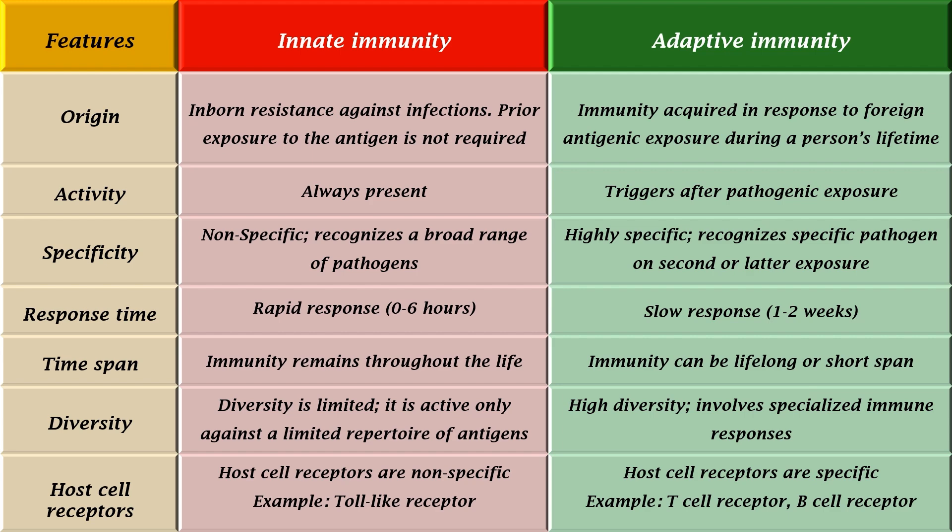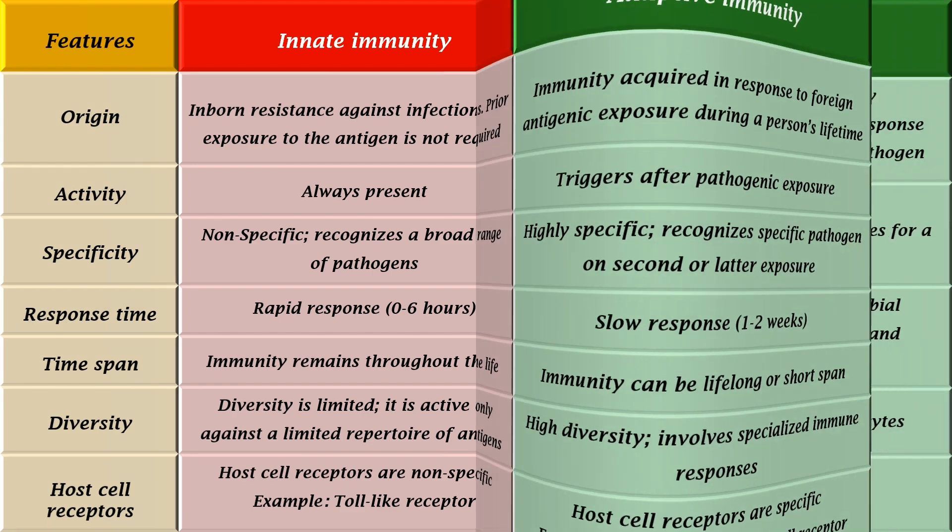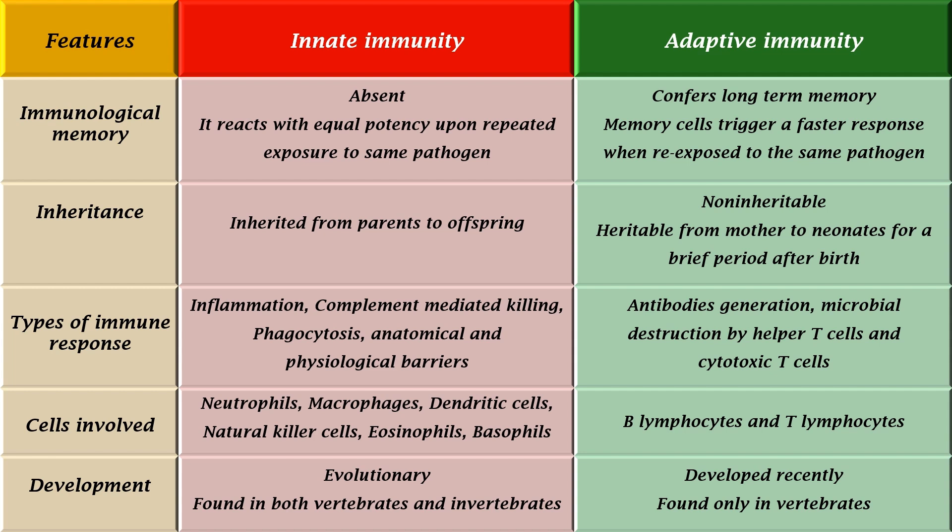The host cell receptors, like toll-like receptors, are nonspecific in innate immunity, while T-cell receptors and B-cell receptors are specific in adaptive immunity. Immunological memory is absent in innate immunity, and it reacts with equal potency upon repeated exposure to the same pathogen. Adaptive immunity confers long-term memory, and memory cells trigger a faster response when re-exposed to the same pathogen.